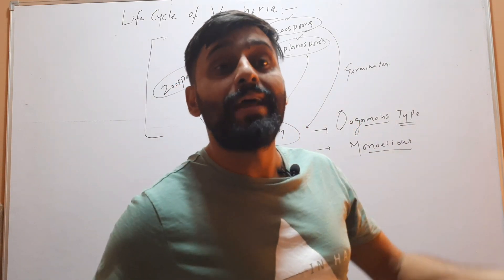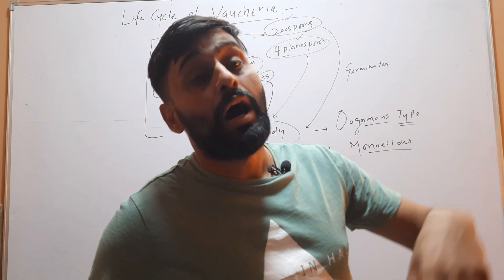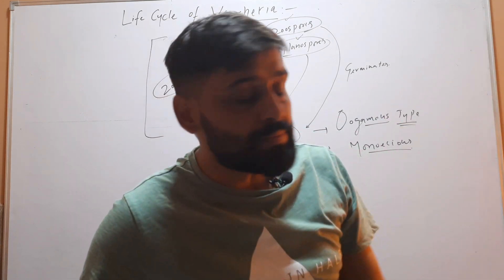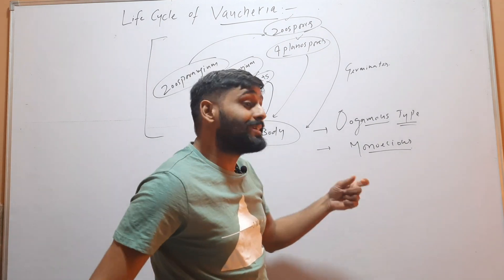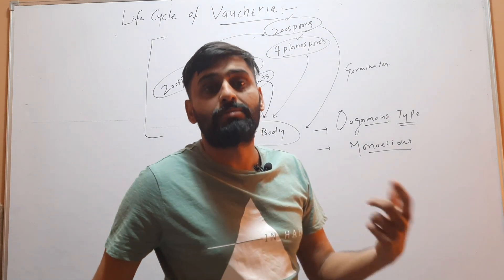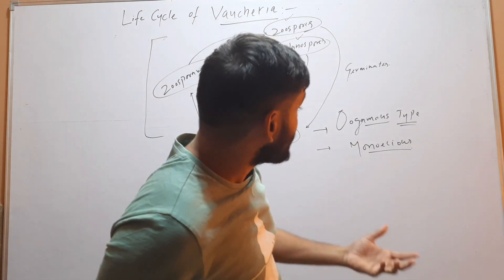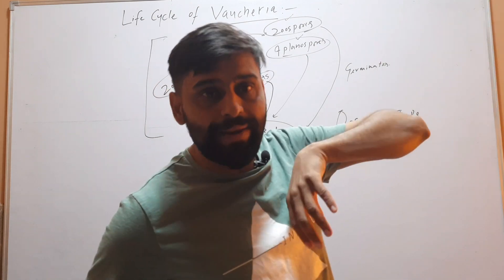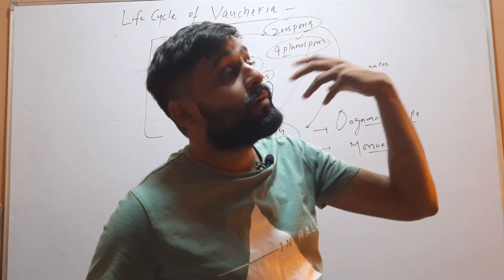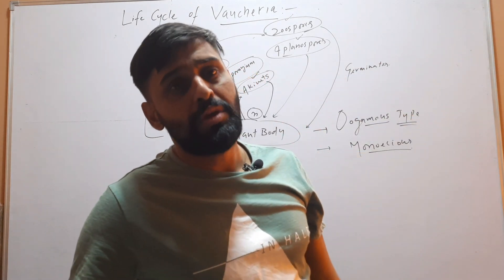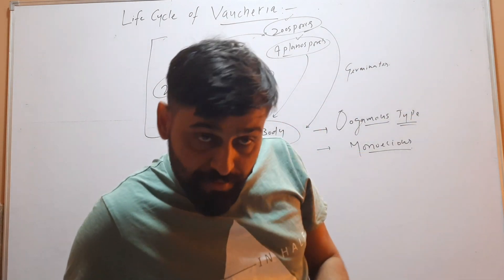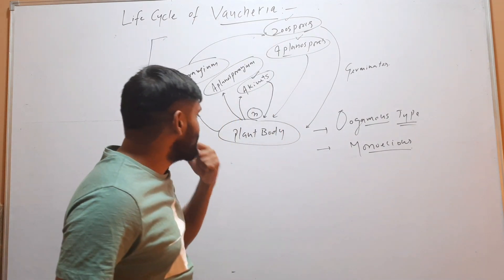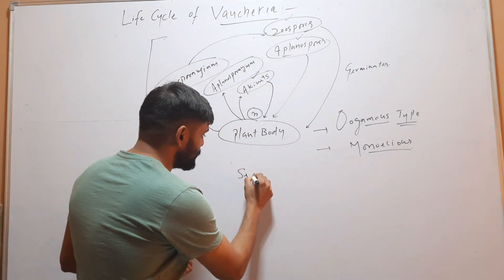In case of sexual reproduction, Vaucheria is mostly monoecious, meaning the male and female reproductive structures — that is, the oogonium and antheridium — are formed on the same plant body. But in some species, dioecious type of sexual reproduction is also found. In the case of monoecious, since it is filamentous, reproductive structures may form on the same filament or on different filaments.